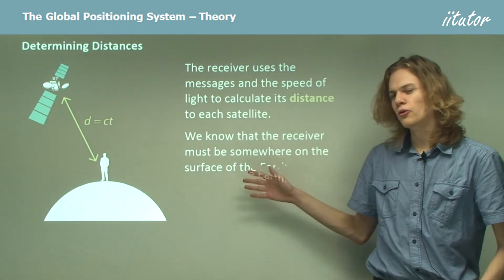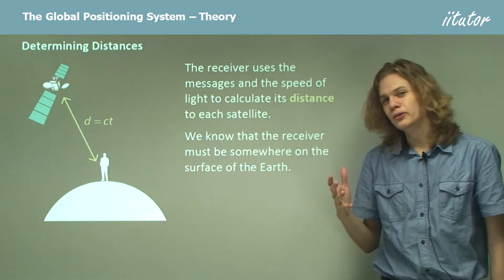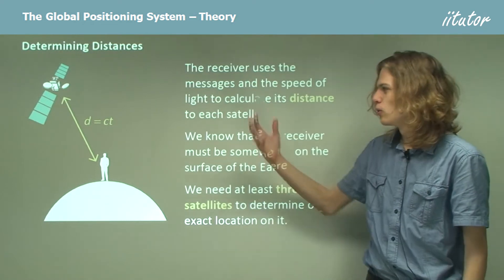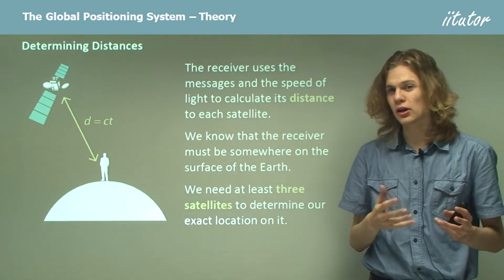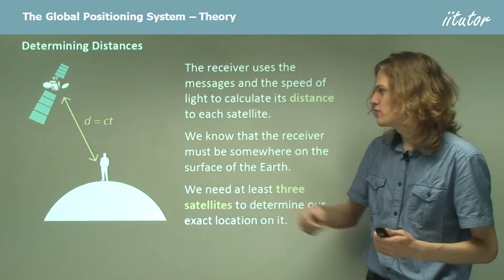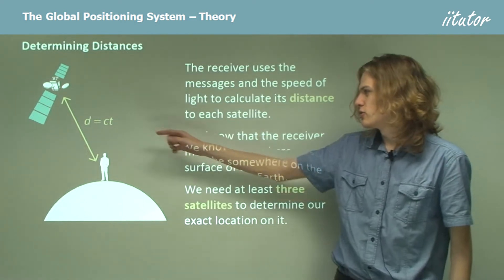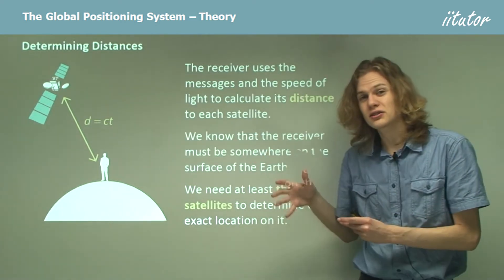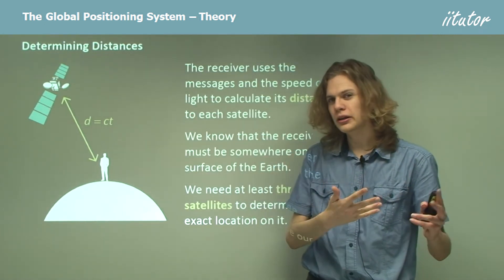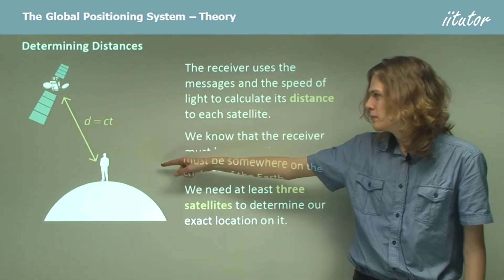We know the receiver has to be somewhere on the surface of the earth, and we know the exact location of the satellite and the time at which the satellite sent its signal. If we have three satellites all sending certain times from their clocks, we can determine exactly how long it took for each message to get there — that's our value for t. We know the messages travel at the speed of light, c, and distance equals speed times time. So by multiplying the time delay by the speed of light we can get the distance between the receiver and the satellite.